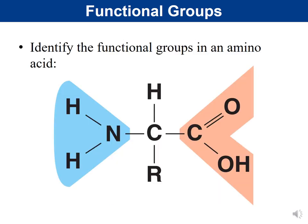Let's identify the functional groups in an amino acid. The amino acid has a central carbon bound to a hydrogen, an R group, and two highlighted regions. The blue region is an amino group and the red/pink region is a carboxyl group. This is why they're called amino acids — the 'amino' comes from the amino group, and the 'acid' comes from the carboxyl group, which can donate hydrogens to the solution.